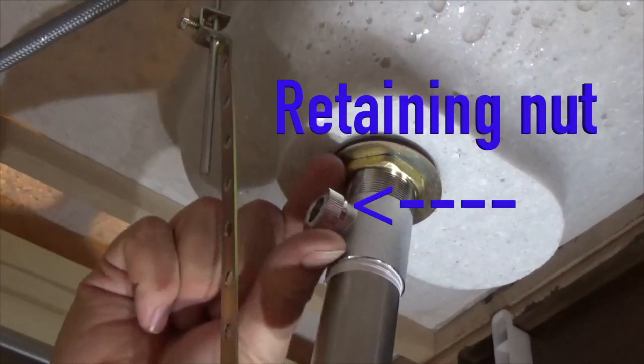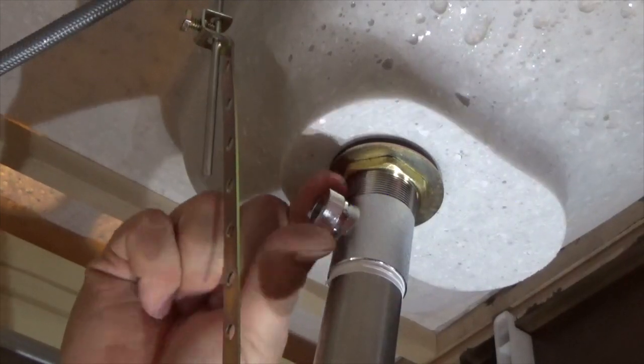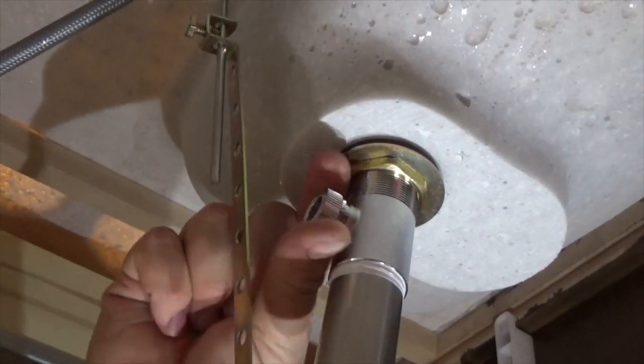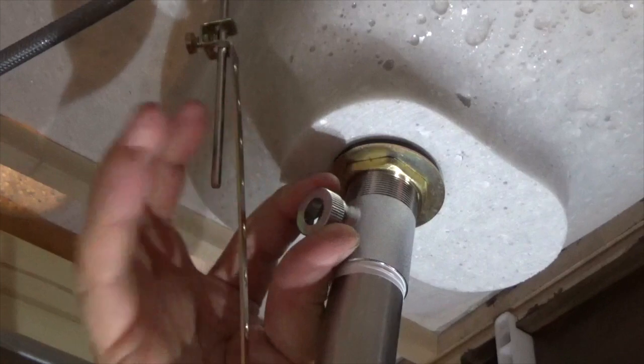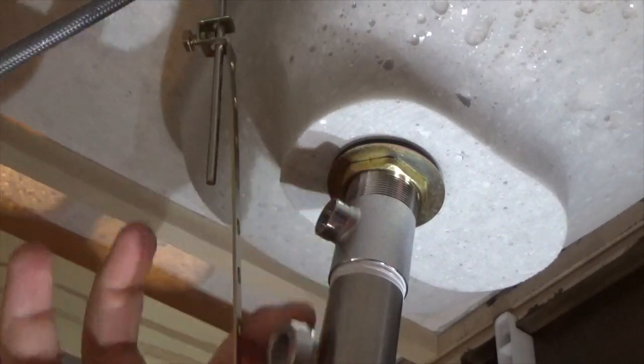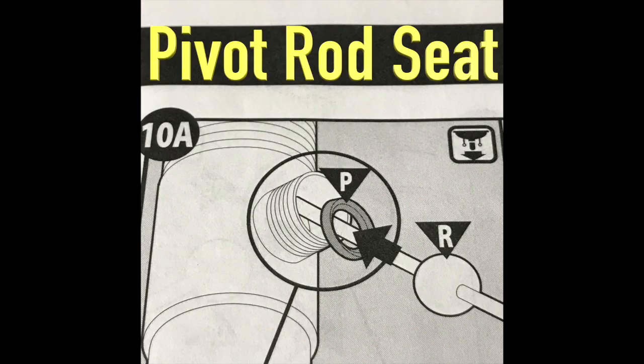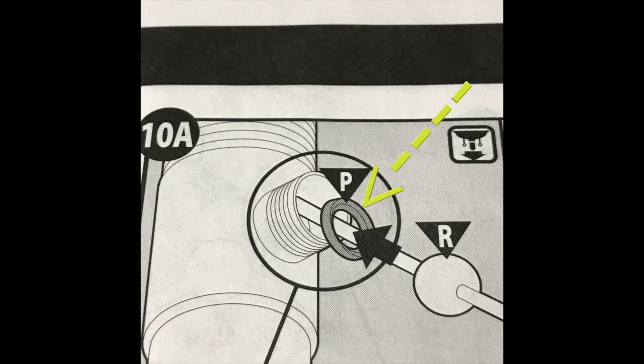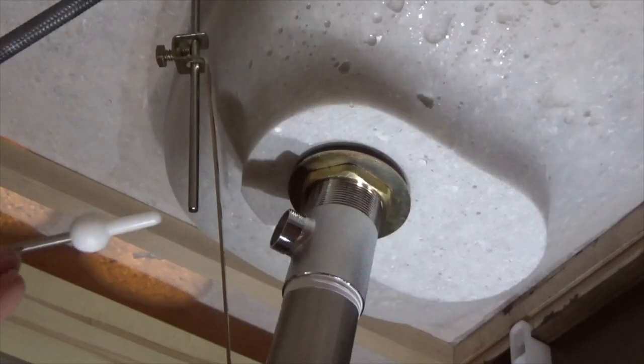Next, remove the retaining nut from the drain body. Once this has been removed, you will need to peer inside and verify a white plastic pivot rod seat. This will look like a plastic washer with a beveled side that is facing out. Assemble the pivot rod in this manner,